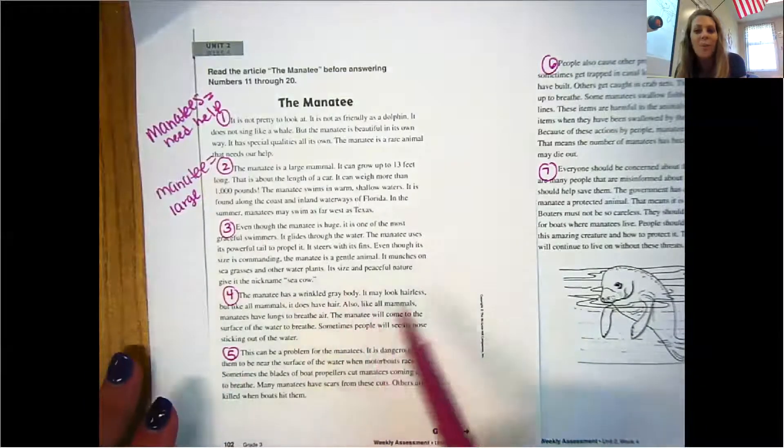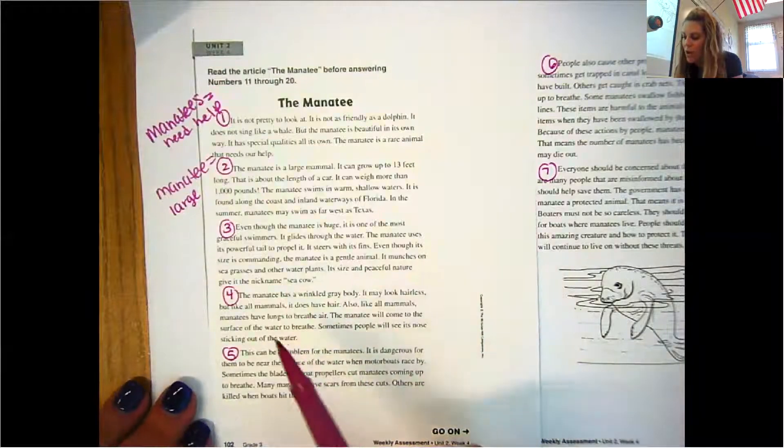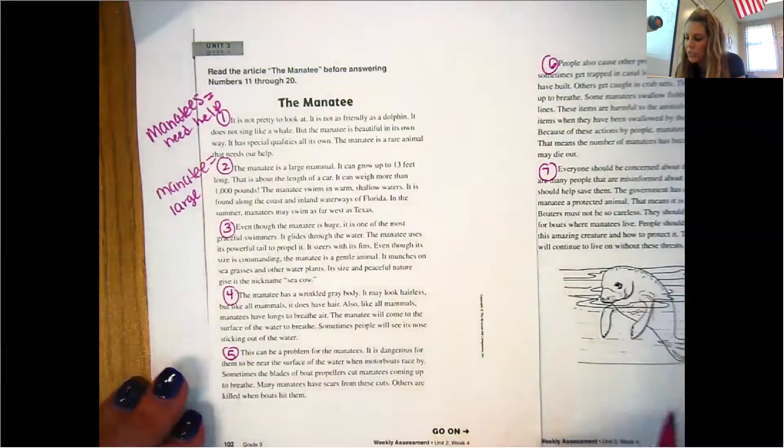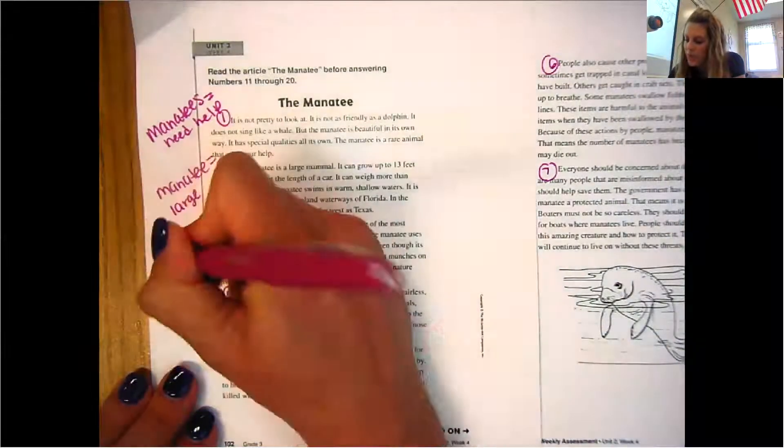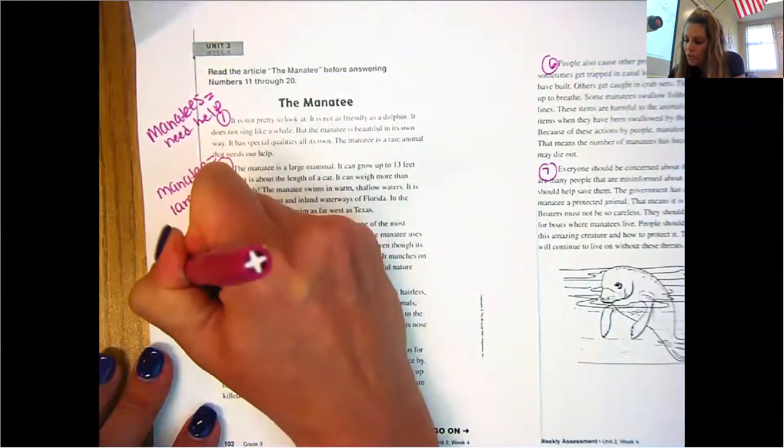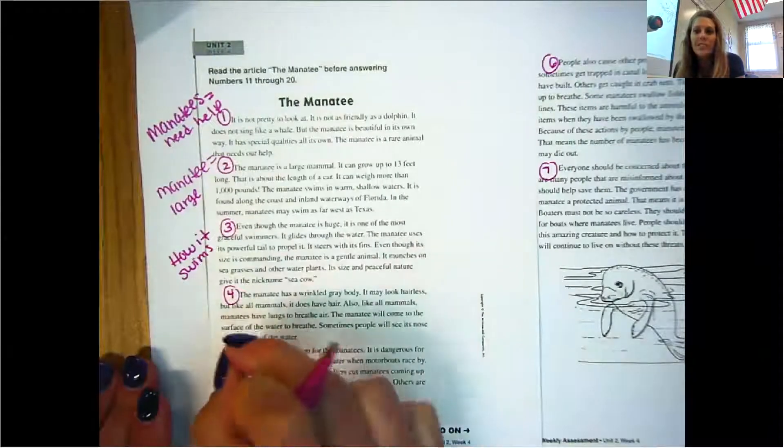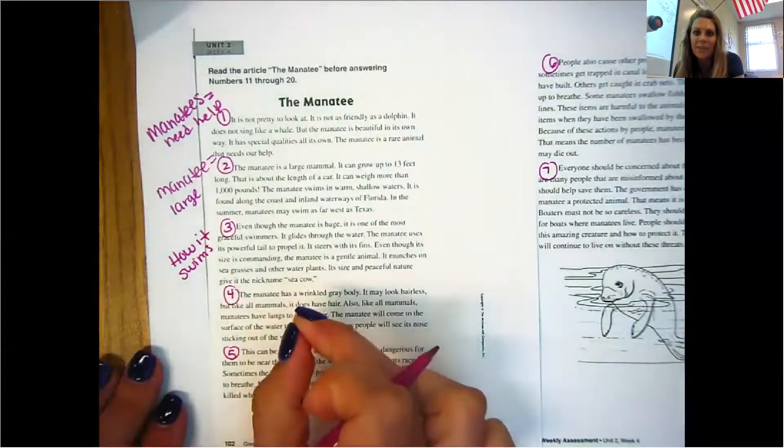Again, there's a couple different little categories in there that you could have written about. You could have written about how it swims. I think that's what I'm going to put. You could have also written about what it eats, or you could have said like nickname. That's how it gets its nickname.